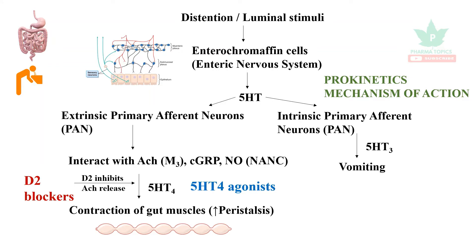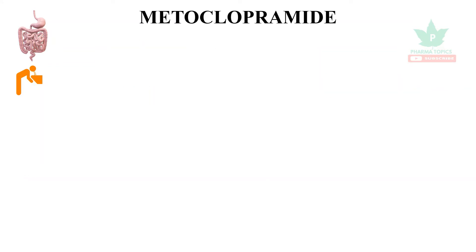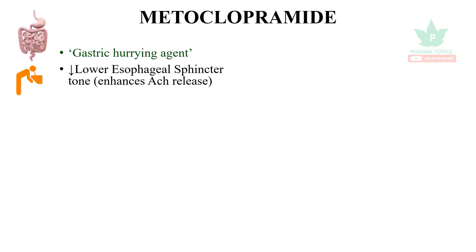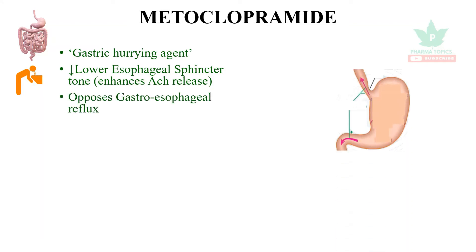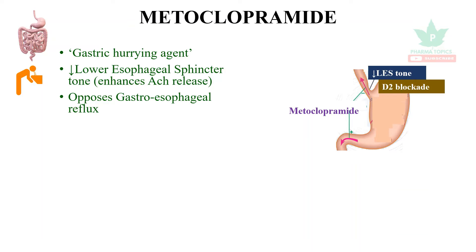Metoclopramide is also called a gastric hurrying agent. It lowers the lower esophageal sphincter tone, enhances acetylcholine release, opposes gastroesophageal reflux, and is useful in GERD. It causes D2 blockade in the gastrointestinal tract and also reduces lower esophageal sphincter tone.